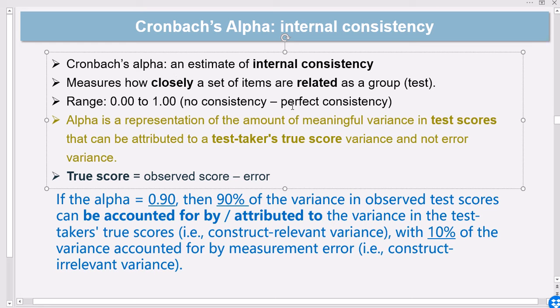Zero is no consistency and one is perfect consistency of the test items or tasks. Sometimes you encounter a scenario where the Cronbach's alpha value is smaller than zero, that's a negative value.